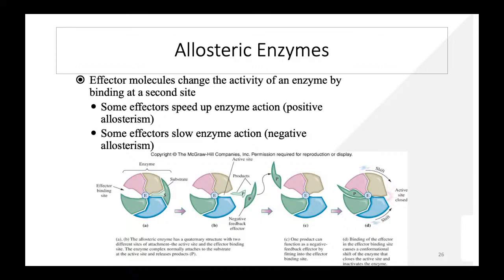These effector factors can be of two types: positive or negative. Positive ones speed up the enzymatic reaction — called positive allosterism. Negative ones slow down the reaction — called negative allosterism. The example discussed here is negative allosterism.